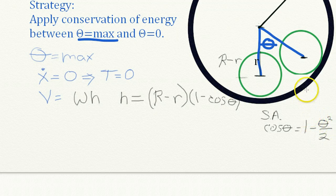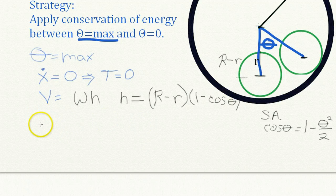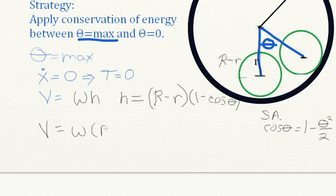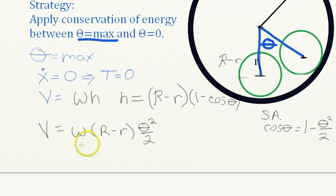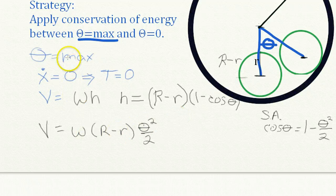Of course, in the small angle approximation, theta is always in radians. Substituting one minus theta squared over two for cosine theta, the potential energy equals the weight times big R minus little r, times theta squared divided by two. The kinetic energy is zero, so the total energy equals this potential energy. This is only valid for small angles. Next, we calculate the total energy at theta equals zero.